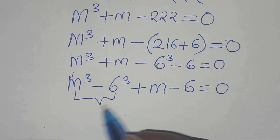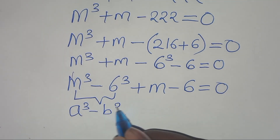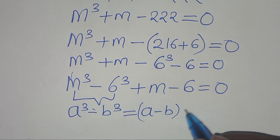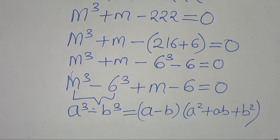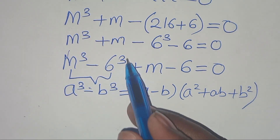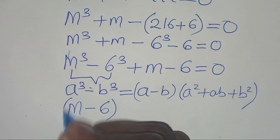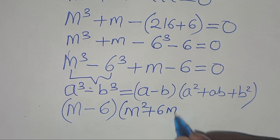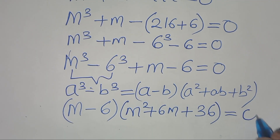This particular part is the difference of two cubes, expressed as a to the power 3 minus b to the power 3. We can express this as (a minus b)(a squared plus ab plus b squared). Applying this, m to the power 3 minus 6 to the power 3 is equal to (m minus 6)(m squared plus 6m plus 6 squared), which is 36, this is equal to 0.